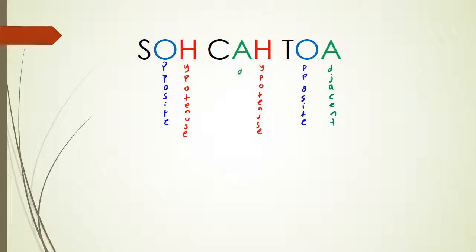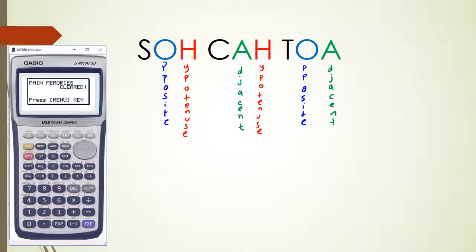Now what you also have is this SET. They stand for three things as well. And to find out where they are, I'll show you what they are in the calculator. So S actually stands for sine, C stands for cos, and T stands for tan.